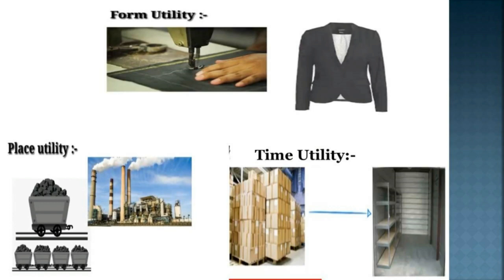Look at the picture. Form utility — when a tailor converts cloth into a garment, that is an example of form utility. Place utility — transportation of coal from mines to industry; wherever coal is needed, it is transported. Time utility happens when goods are stored in plenty and supplied when they are in shortage — stored on one side in plenty, and supplied whenever needed.